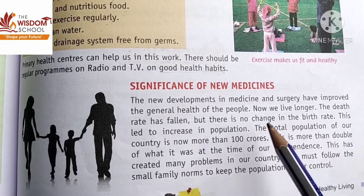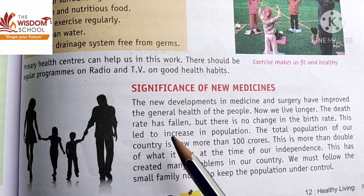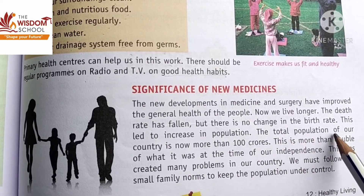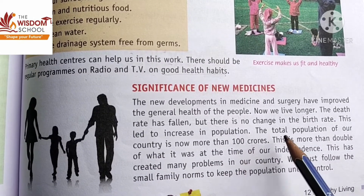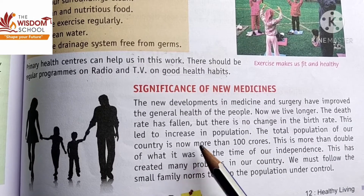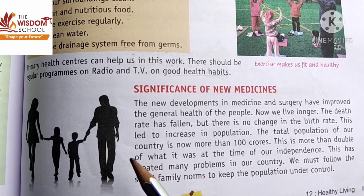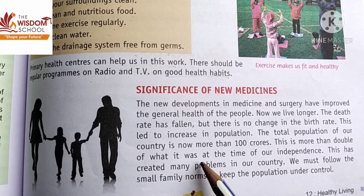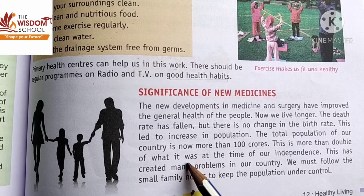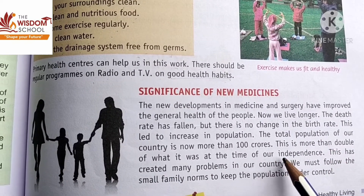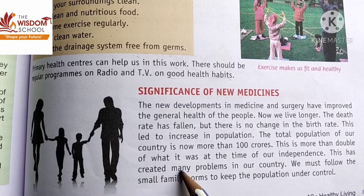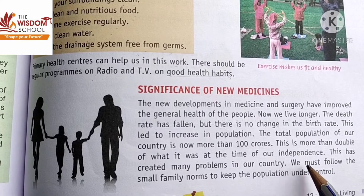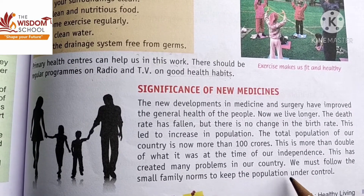But there is no change in birth rate, which leads to an increase in population. The total population of our country is now more than 100 crores — more than double of what it was at the time of independence. This has created many problems in our country, and we must follow the small family norms to keep the population under control.